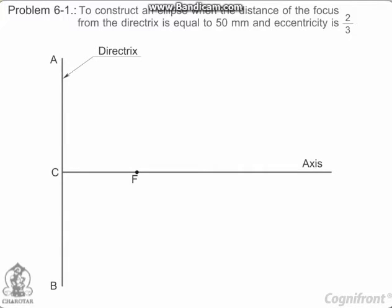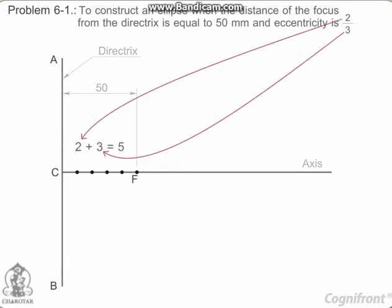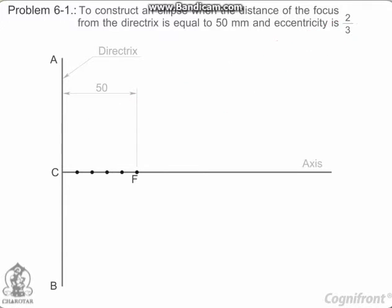Mark a focus F on the axis such that CF equals 50 mm. Divide CF into 5 equal divisions, sum of numerator and denominator of the eccentricity. Mark the vertex V on the third division point from C.